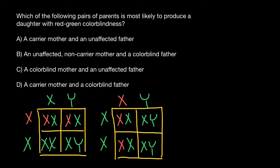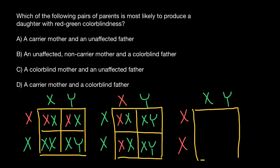Now let's analyze variant C: a colorblind mother and an affected father. The genotype of the mother is going to be two defective X chromosomes. The father is also affected, so this is going to be his genotype. Let's again build a simple Punnett square and take a look at what we are going to see.